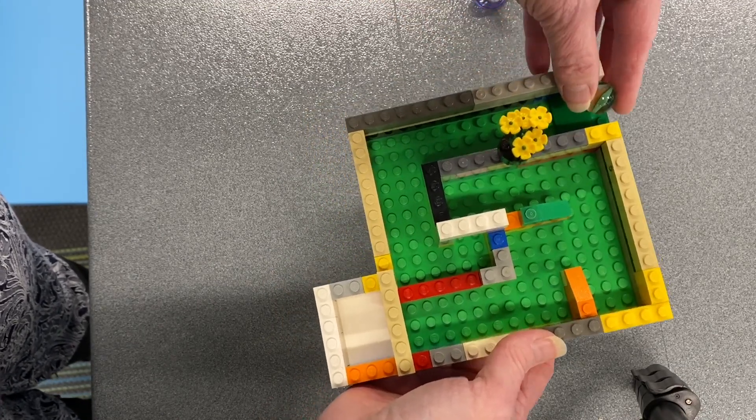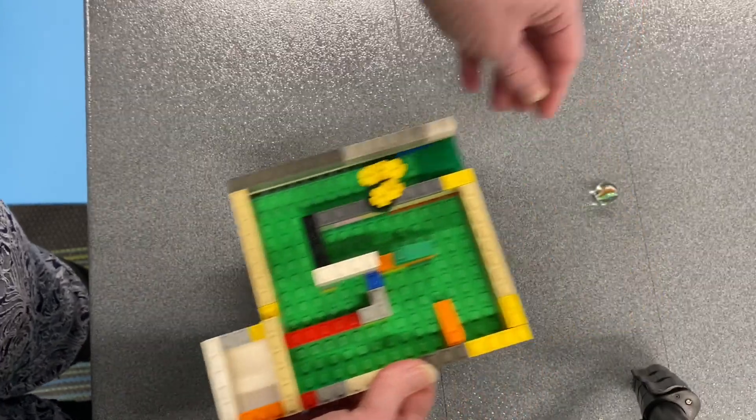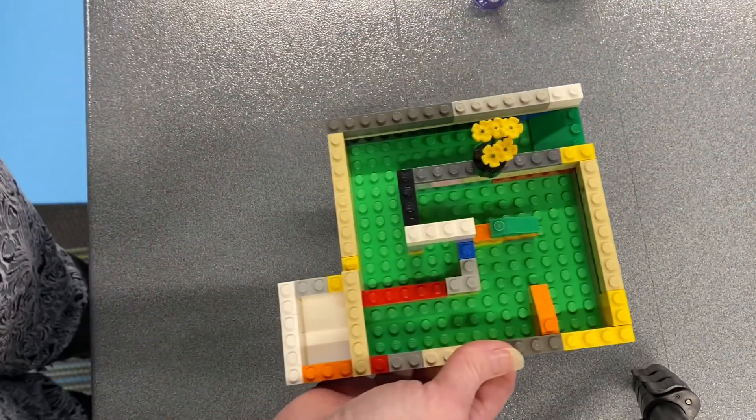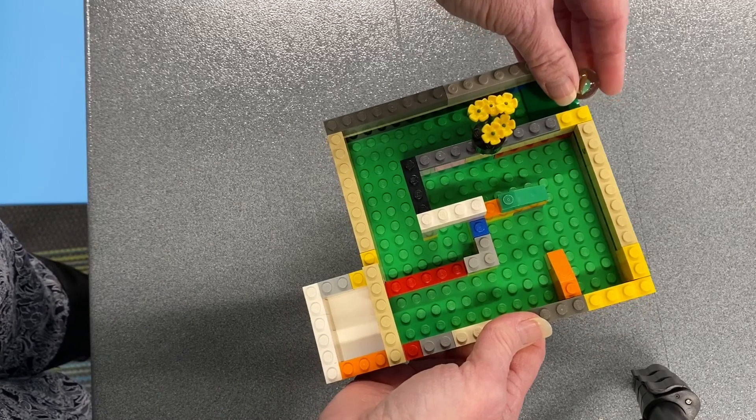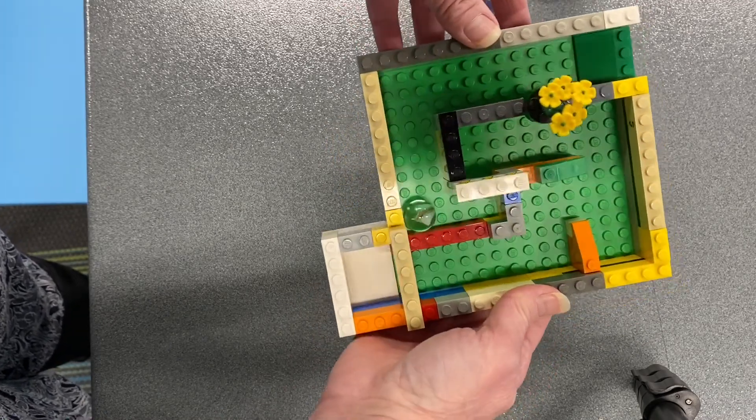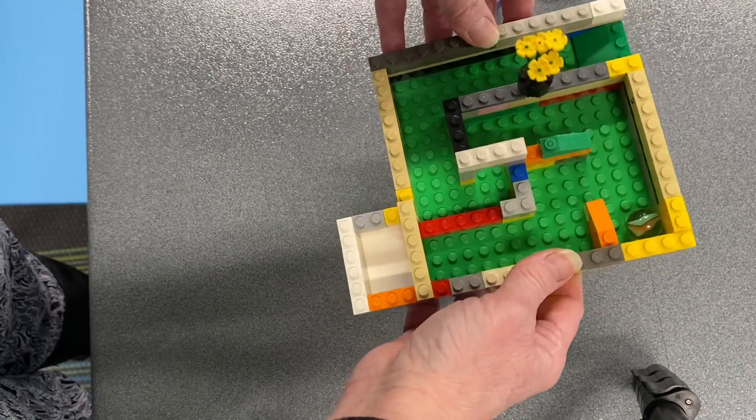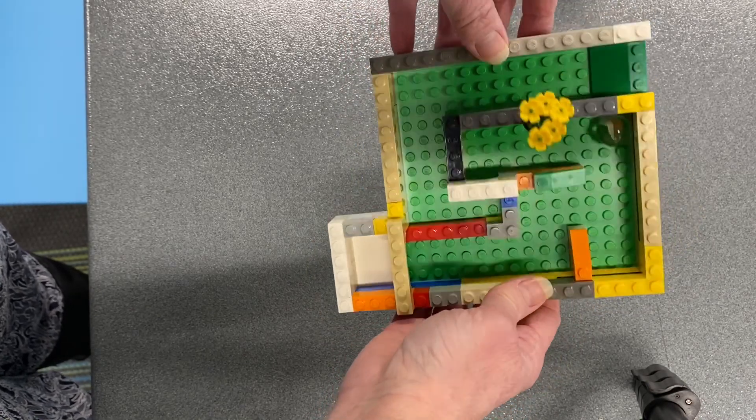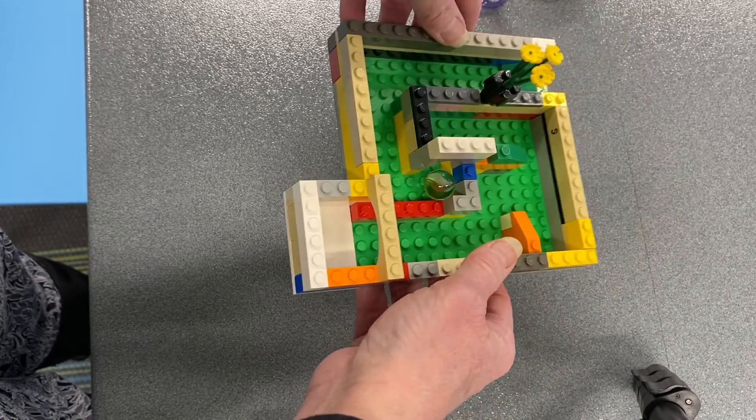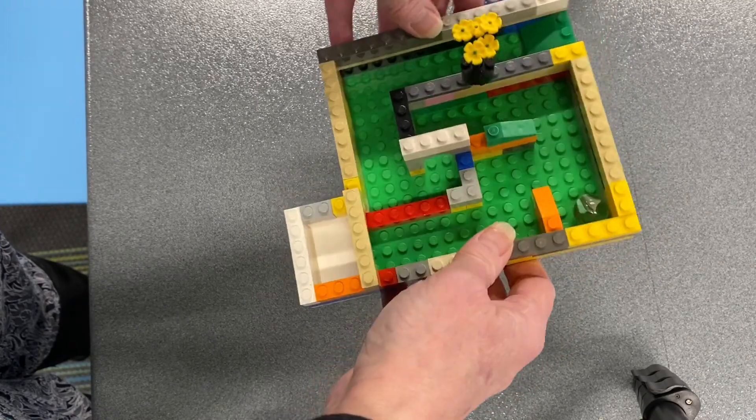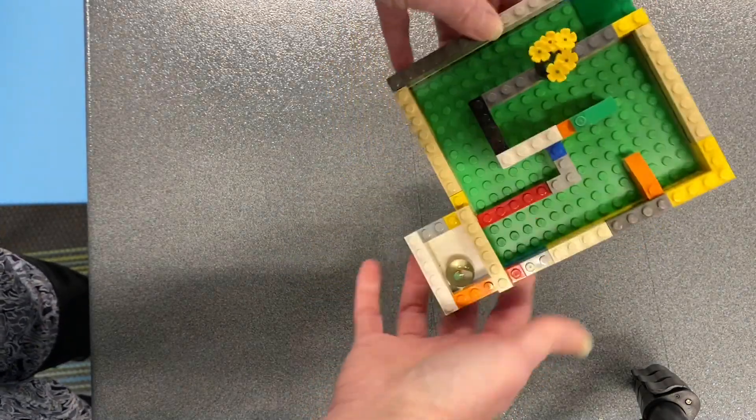So I'll start it in here. Three, two, one, go. Take two. Three, two, one, go. This is the tricky part. There we go.